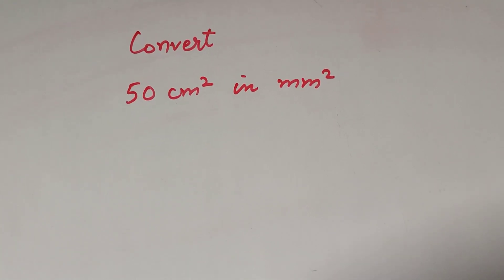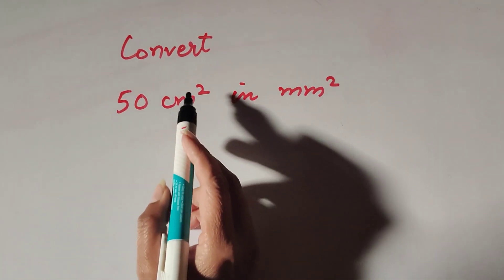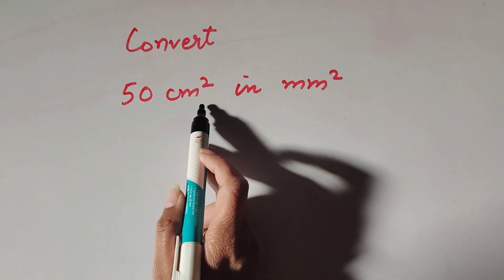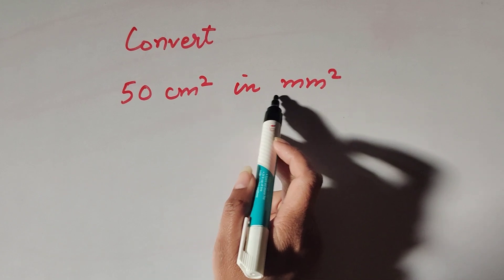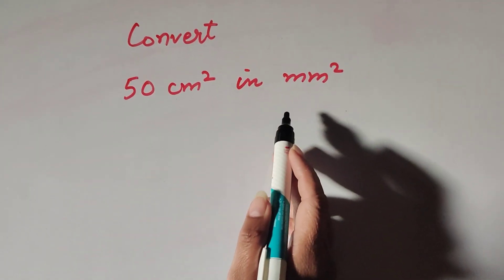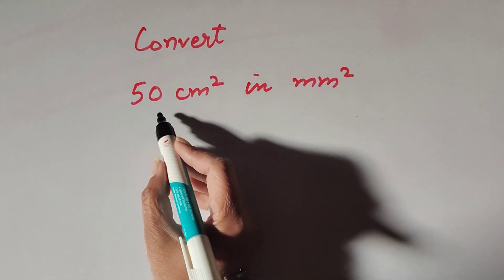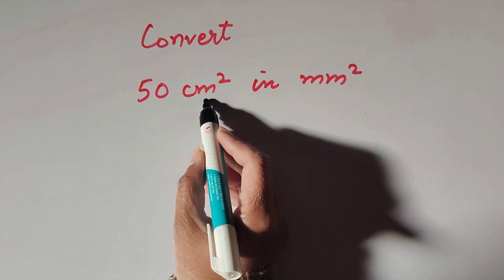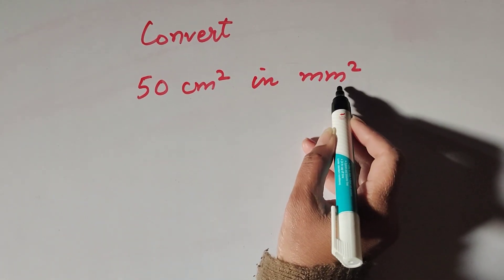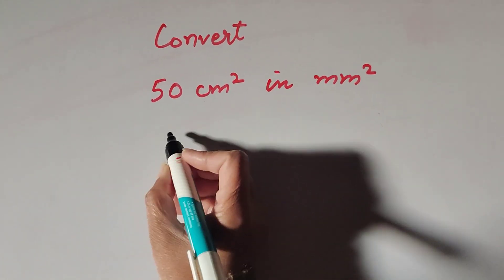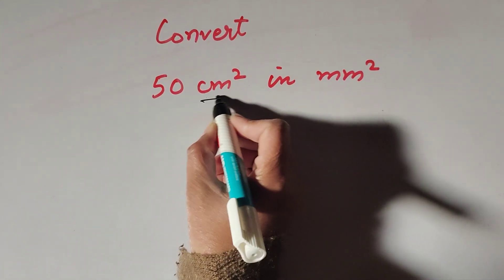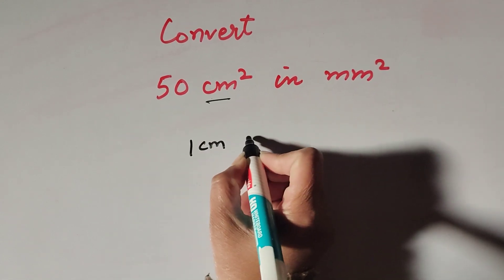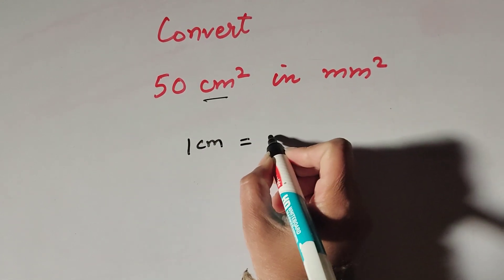Hello friends, welcome to my channel. In this video we discuss converting 50 centimeter square into millimeter square. The unit is centimeter and we change this unit into millimeter. Given is centimeter — we know one centimeter is equal to 10 millimeter.